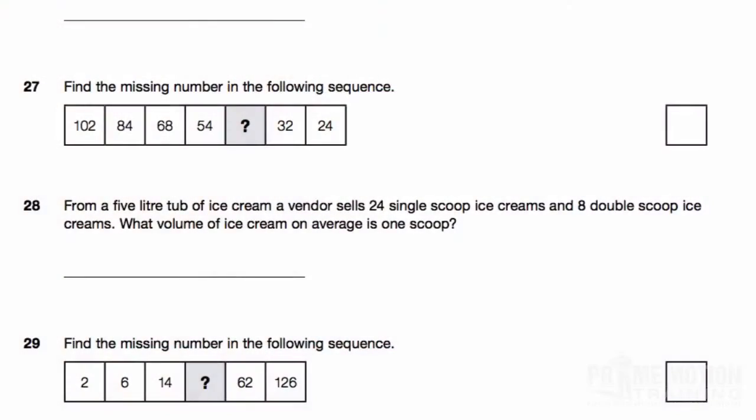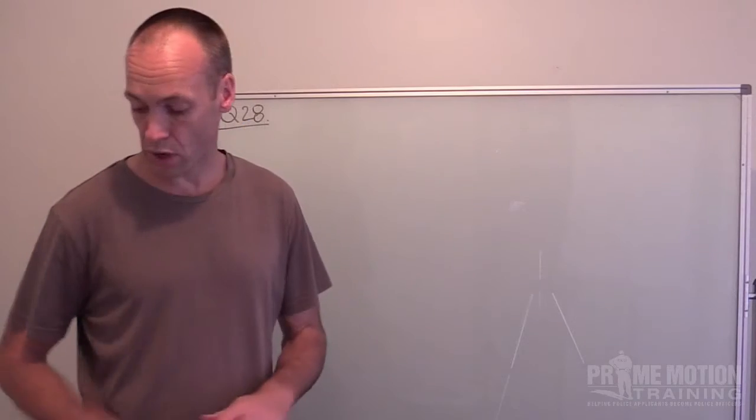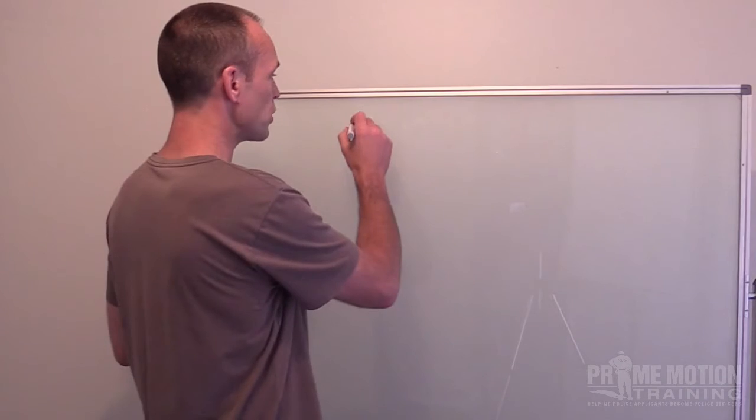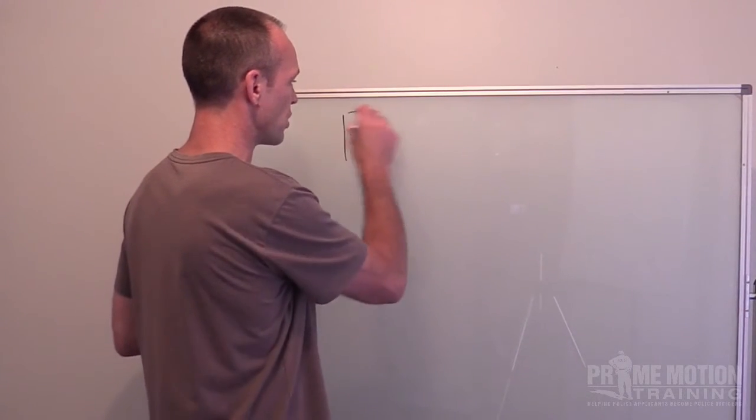Alright, so let's have a look at the question now. So it is number 28 and it says from a 5 litre tub of ice cream, a vendor sells 24 individual scoops and 8 double scoops of ice cream. So what volume of ice cream on average is in one scoop? Let's have a look at that and we will go through it together.